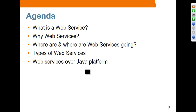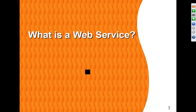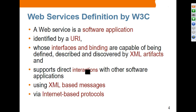We will also cover web services support over the Java platform. The W3C definition of a web service is a software application identified by URI — so web services should be addressable by URI — whose interfaces and bindings are capable of being defined, described, and discovered by XML artifacts. So everything is XML-based in web services.